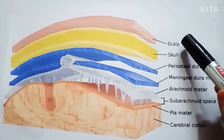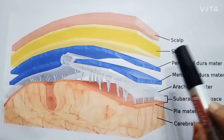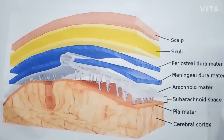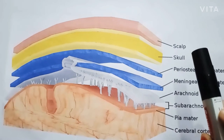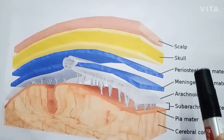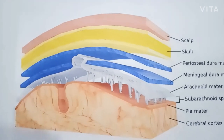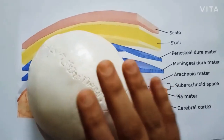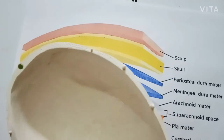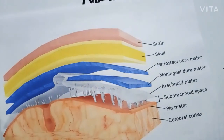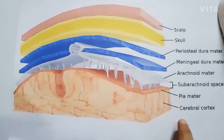This is your scalp — S-C-A-L-P — easy to remember because each letter stands for a layer: S for skin, C for connective tissue, A for aponeurosis, L for loose areolar tissue, P for periosteal layer. After the scalp comes the skull bone, and inside are the three meninges: dura mater, arachnoid matter, and pia mater. Beneath all of these is the cerebral cortex.